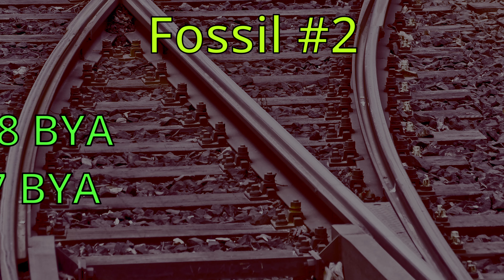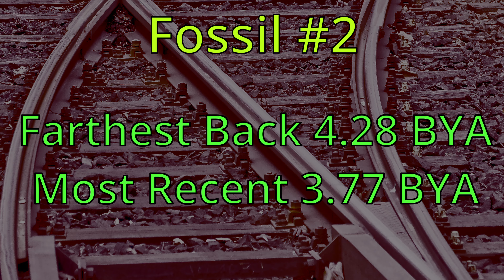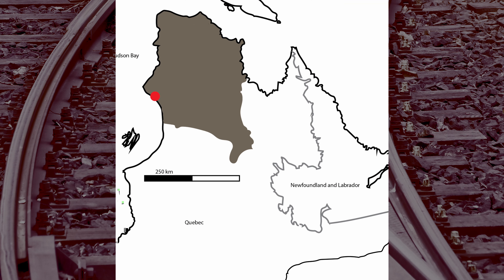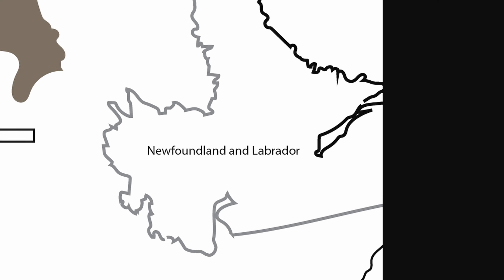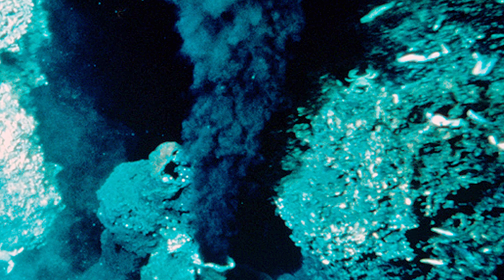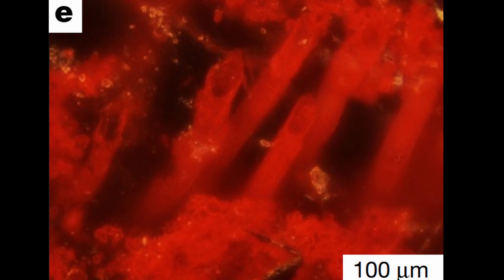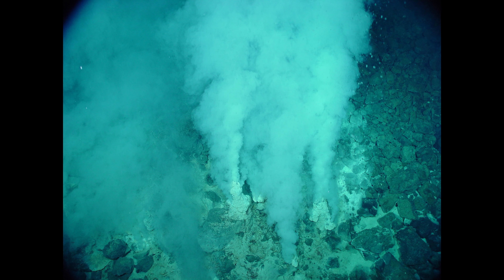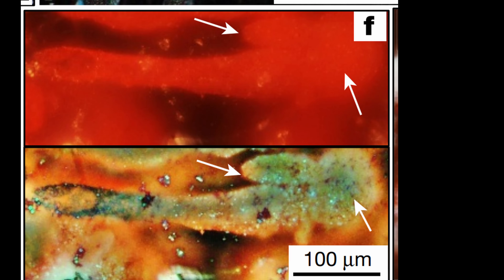The second fossil comes from as recent as 3.77 billion years ago, but it might come from as early as 4.28 billion years ago. There's a debate about the age of these rocks, so they're either very close to the oldest claimed fossil that we have, or actually the oldest claimed fossil that we have. They come from the Nuvvuagittuq greenstone belt in Labrador, Canada. The metal rods seen in the images are argued to have originated near a hydrothermal vent system, one of those hot vent systems on the ocean floor. The scientists who discovered these argue that they're life, by pointing to how similar they are to certain modern types of life that live in the same environment, that form these filamentary and tubular structures.